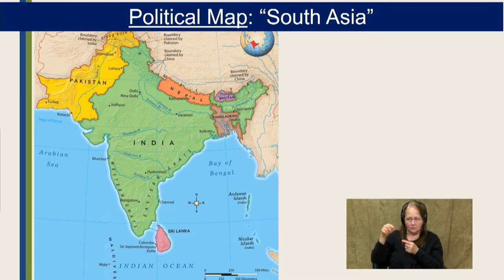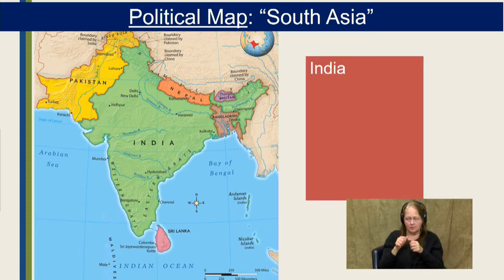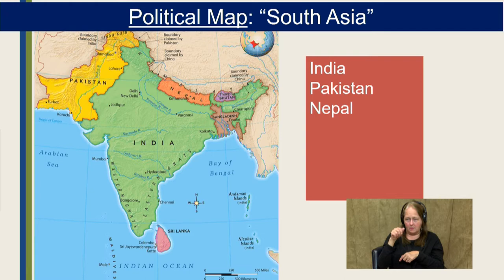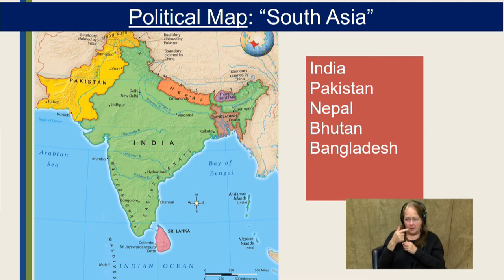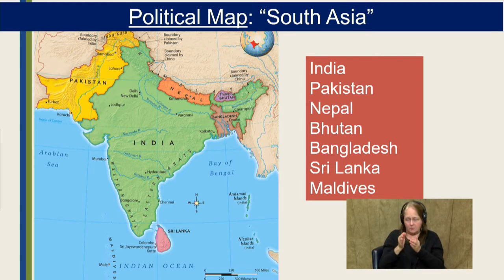Let's first look at our political map of South Asia. South Asia is dominated by one particular country: India. South Asia is often looked at as a diamond-shaped chunk of land. The countries there are India in green, Pakistan to its west in yellow, Nepal in orange, the smaller country of Bhutan in purple, and then Bangladesh. They're also two island nations: Sri Lanka at the southeastern tip of India, and the Maldives.